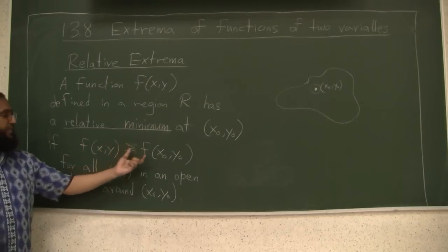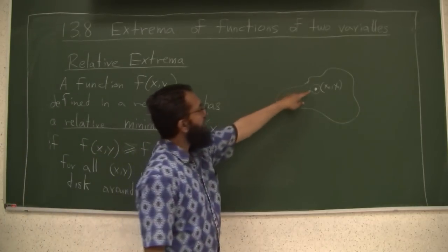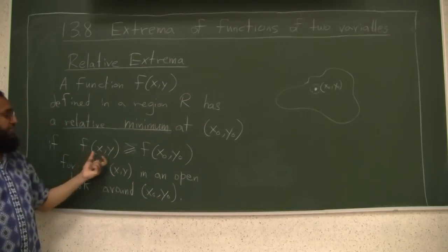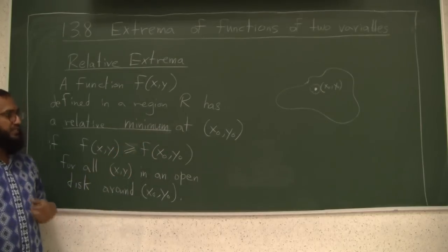So relative minimum would be that you can find an open disk around the point such that all the points in this disk, the value of f there is at least as much as the value of f at that point x0, y0.